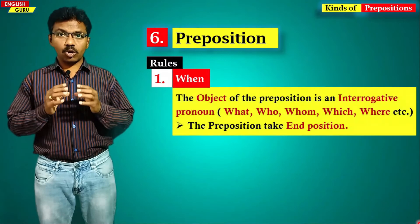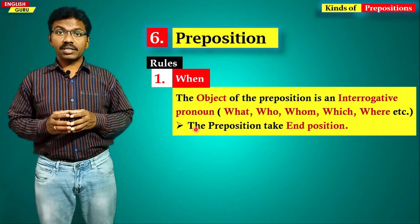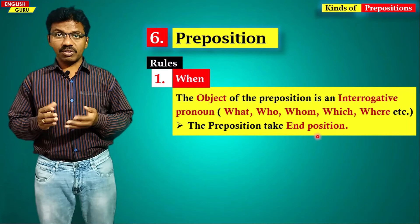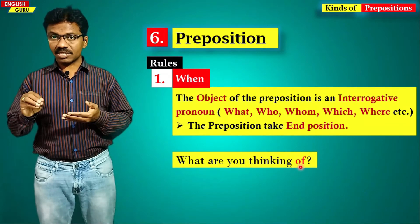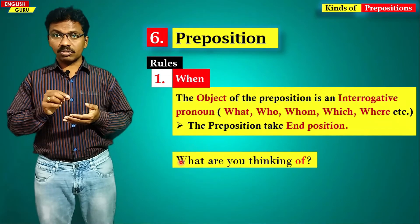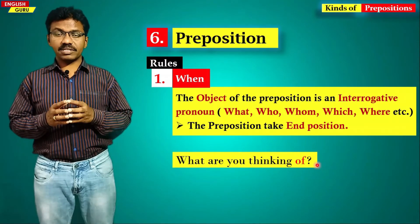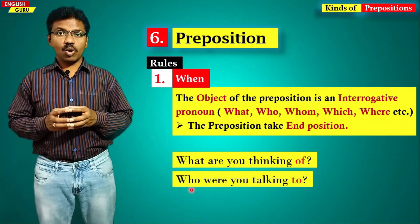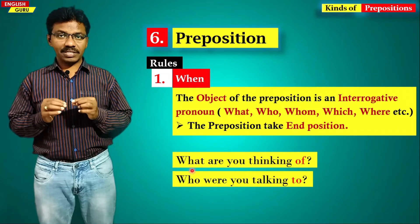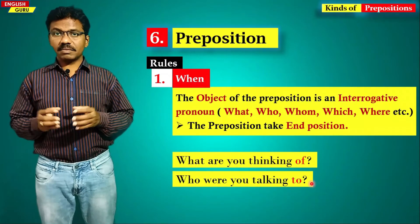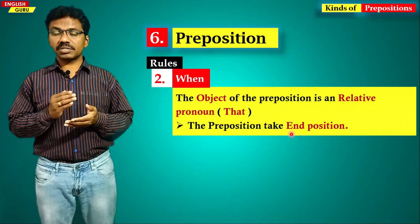There are certain rules about this. The first rule is when the object of the preposition is an interrogative pronoun like 'what', 'who', 'whom', 'which', or 'where' — the preposition always takes the end position. For example, 'what are you thinking of?' — the word 'of' is placed at the end. The object of 'of' is 'what'. Similarly, 'who are you talking to?' — 'who' is the object of 'to', so the preposition is placed at the end.